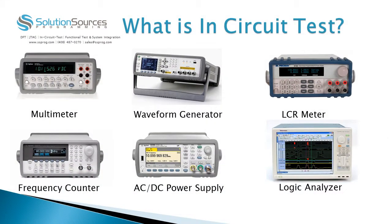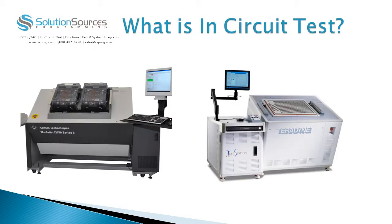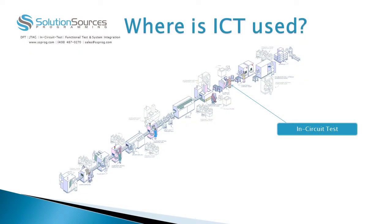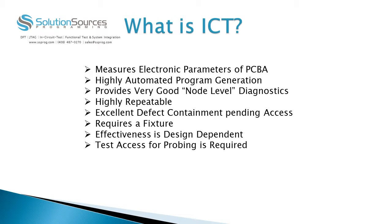What is In-Circuit Test? In-Circuit Test is a combination of many different instruments into one piece of capital machinery. Often located at the end of a manufacturing line, its primary focus is capturing manufacturing defects prior to functional test. In-Circuit Test, often referred to as ICT, measures electronic parameters of a printed circuit board assembly. Its highly automated program generation means we can both build a fixture and generate a custom software program in a matter of weeks. In-Circuit Test provides very good node level diagnostics and it is highly repeatable.